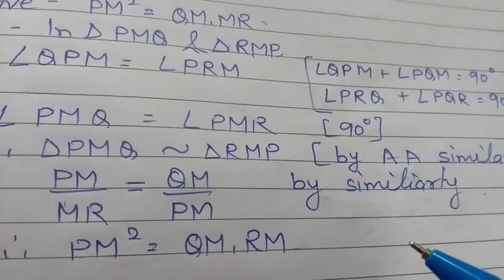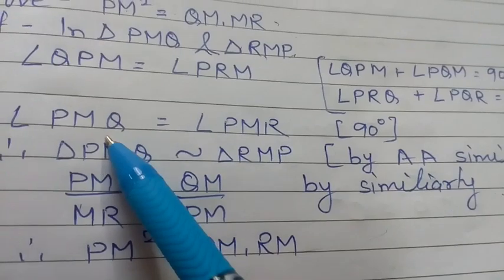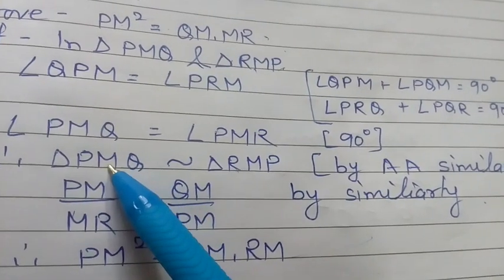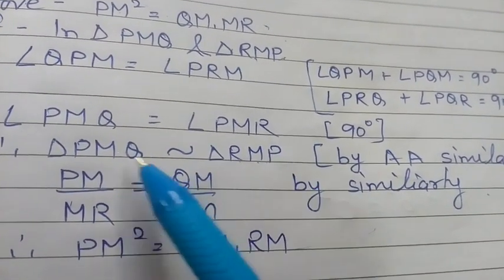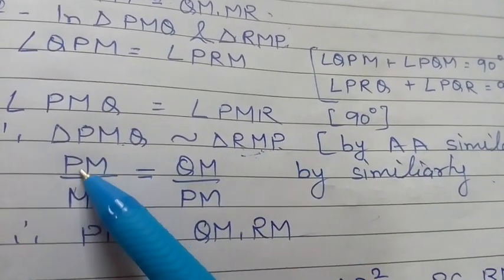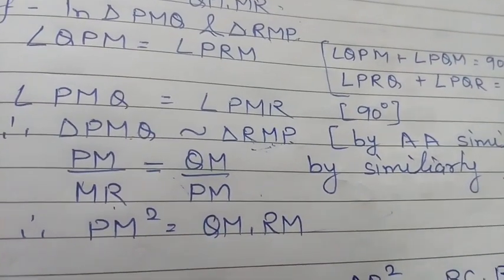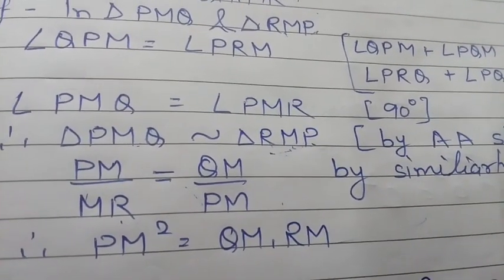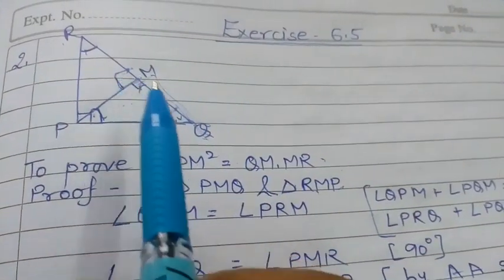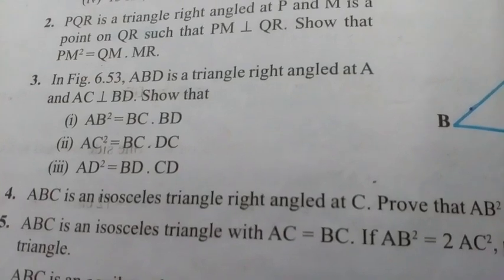Since triangles PMQ and RMP are similar, their sides are proportional. Therefore: PM/RM = QM/PM. Cross-multiplying gives PM² = QM × MR. Hence proved. For this, we identified the two triangles in which these sides belong.